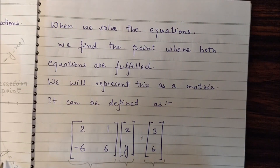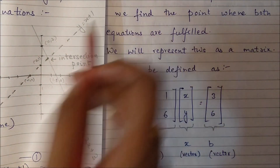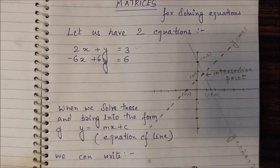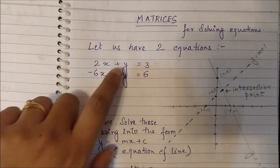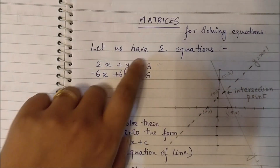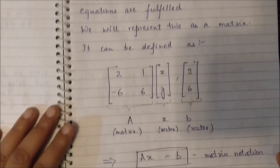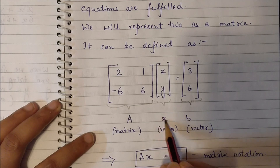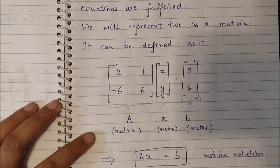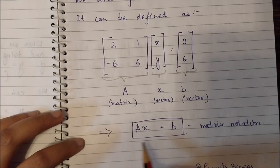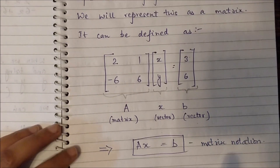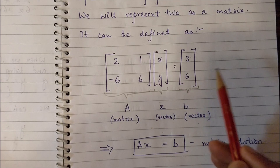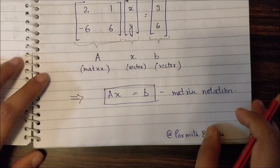The two lines — y equals minus 2x plus 3 and y equals x plus 1 — can be represented in matrix format. The first matrix is [[2, -6], [1, 6]], the second is the vector [x, y] (what we're solving for), and the third is the values [3, 6]. This gives the matrix equation Ax equals b. Using matrix multiplication, 2x plus y equals 3 and minus 6x plus 6y equals 6 — the same original equations.